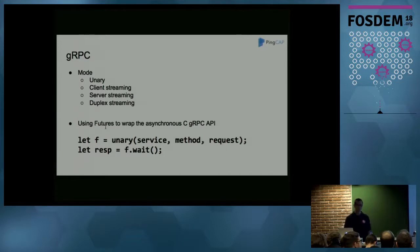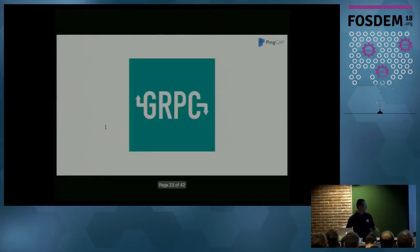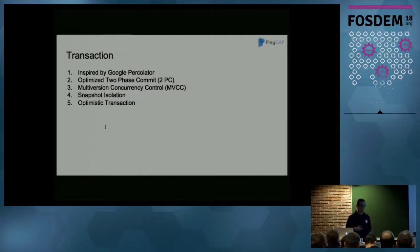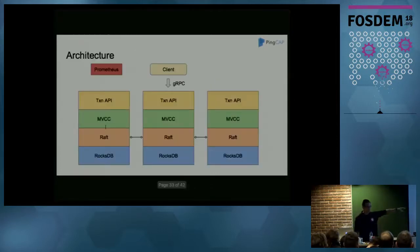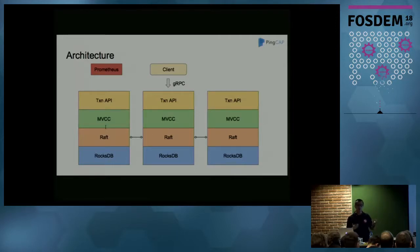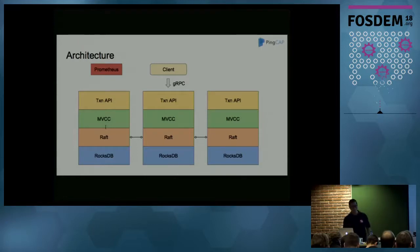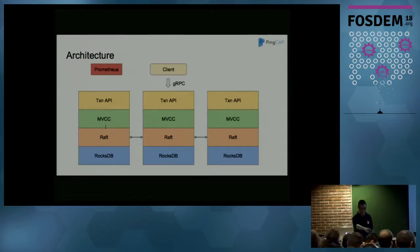Question: Do you support predicate pushdown for scaling out? That's a good question. I didn't mention it here, but TiKV not only provides a transactional API — it also provides a coprocessor API. The coprocessor concept is similar to HBase coprocessors: you can push down logic directly to TiKV, do some computation there, and return only the result. We already do this in TiDB for query pushdown. Thank you.